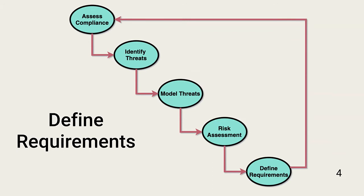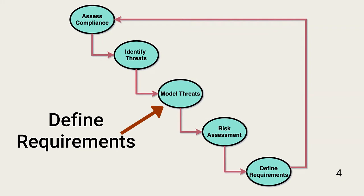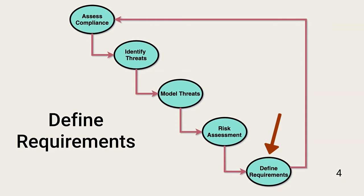Requirements management is a cyclical process. It begins with understanding the statutory, regulatory, and industry requirements of an organization. Second, the security team identifies probable human and non-human threats. This is followed by modeling each threat to determine the likelihood that a threat will compromise confidentiality, integrity, or availability. Finally, the team performs a risk assessment to determine business impact for each threat. Once these steps are completed, the team defines and prioritizes security requirements that both meet compliance needs and effectively manage risk at levels acceptable to management.